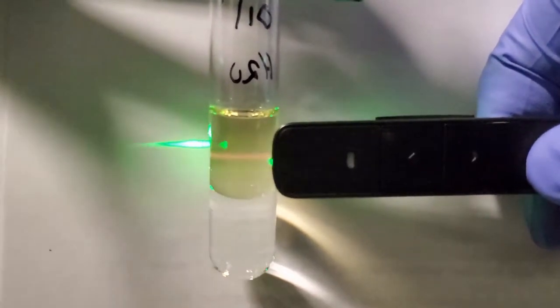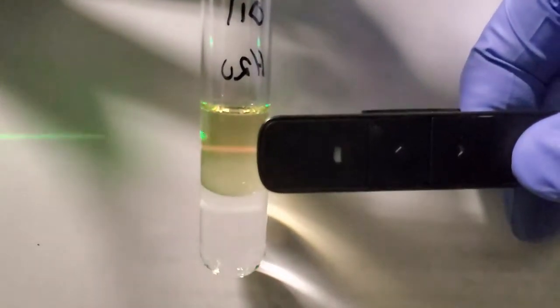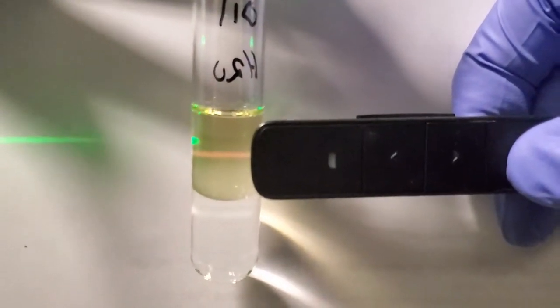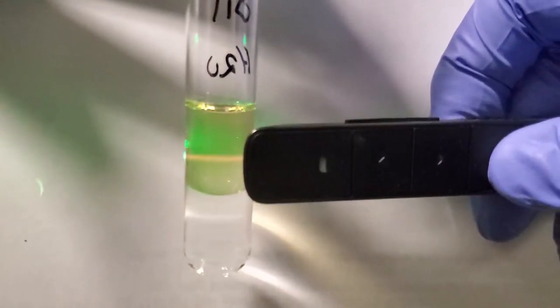This is a process known as fluorescence. Olive oil contains a bunch of organic molecules that can absorb one color of light and then emit it as a different color.